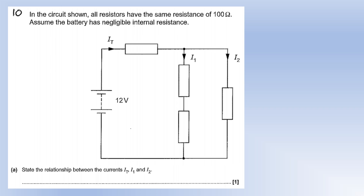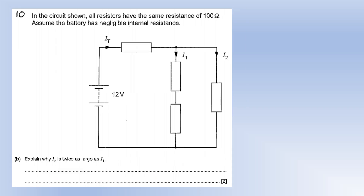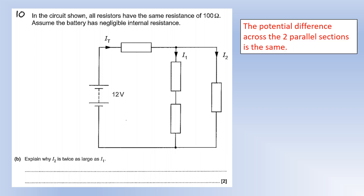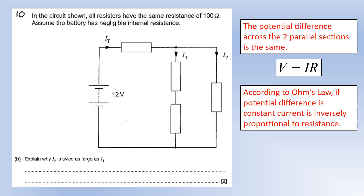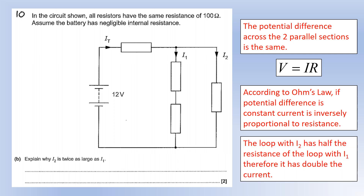Question 10: all resistors are 100 ohms, battery has negligible internal resistance. Using Kirchhoff's current law, the total current iT = i1 + i2. To explain why i2 is twice i1: the two parallel sections share the same potential difference. By Ohm's law, current is inversely proportional to resistance. i1 passes through double the resistance of i2, so i1 is half the current — meaning i2 is twice i1.